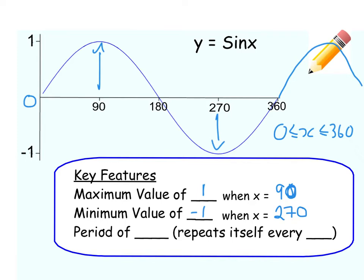Now this word here — period — is very important. They can sometimes ask you: what is the period of a graph given an equation? The period is where the graph starts to repeat itself. The period of the most basic sine graph is 360, because that's where the shape would then start to repeat — it repeats itself every 360 degrees.